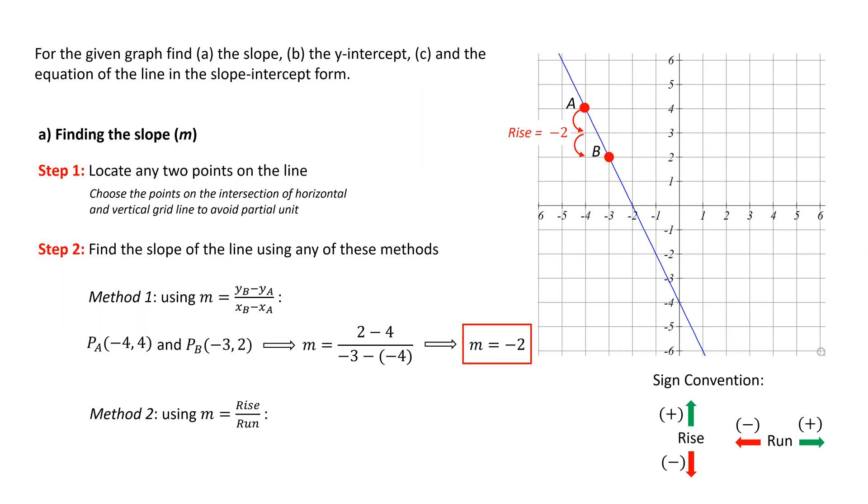We also need to move one unit to the right, so the run will be positive 1. Substituting rise and run in this slope formula will get negative 2 over 1, or negative 2 for the slope, which is exactly the same as what we've obtained using method 1.